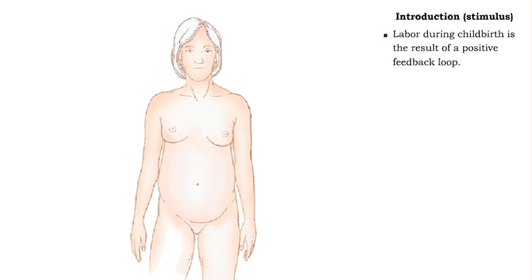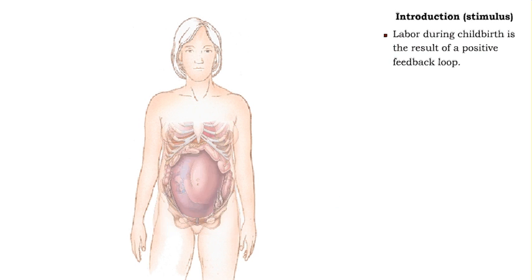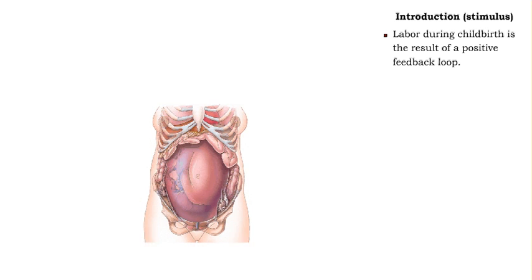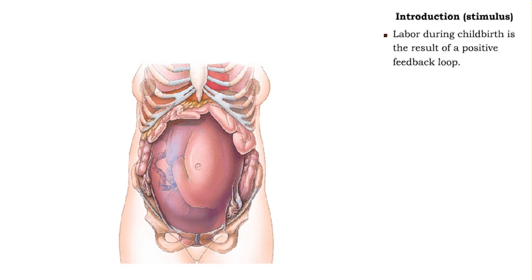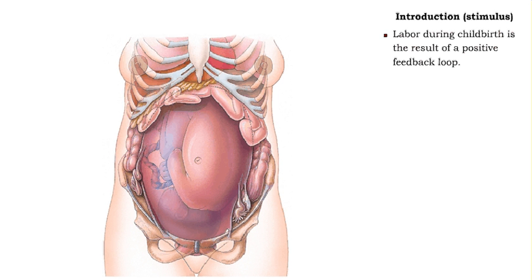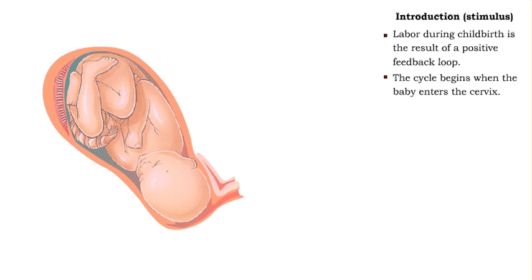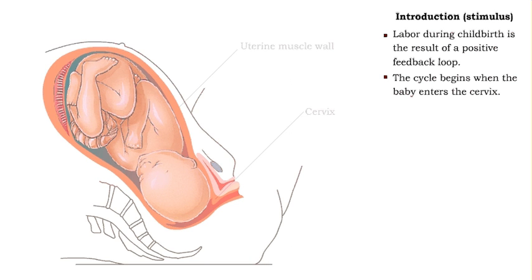Labor preceding childbirth is an excellent example of a positive feedback loop that strengthens or intensifies the controlled condition. The stimulus that starts the cycle is contractions of the uterus that moves the baby's head into the cervix.